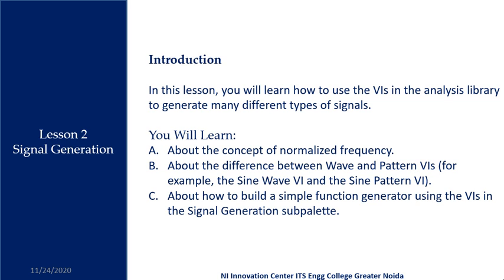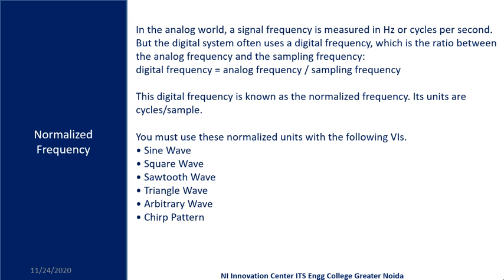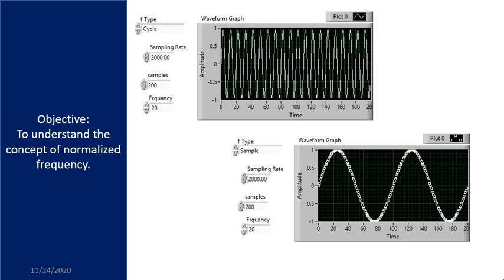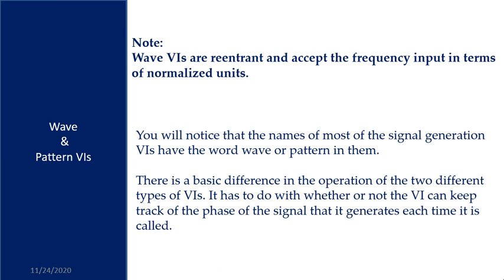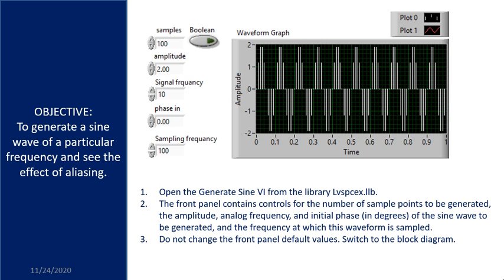In the next session, in signal generation, we will discuss about the difference between sine wave and sine pattern, square wave and square pattern. We will discuss about digital frequency, analog frequency, sampling frequency, and more. In this concept, you will learn how we can write a program for frequency normalization first. After that, we will learn what is the difference between waves and patterns — meaning sine wave VI and sine pattern VI.